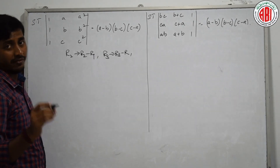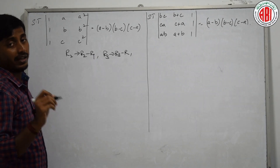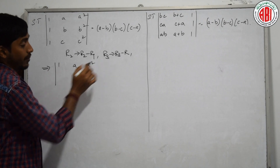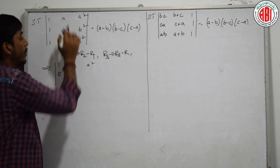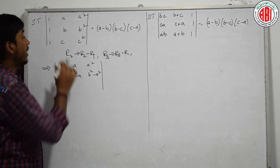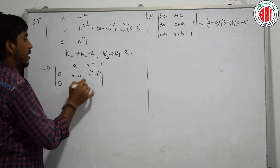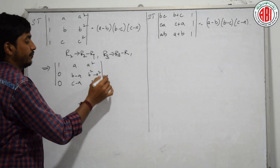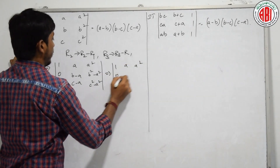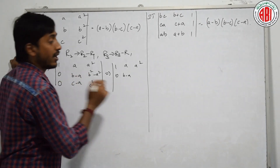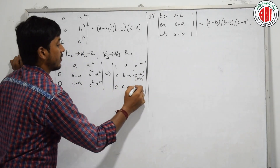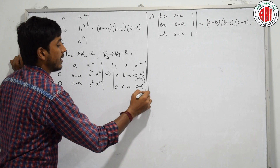Applying R2→R2−R1 and R3→R3−R1: the first row 1, A, A² stays as it is. The second row becomes: 1 minus 1 is 0, then B minus A, then B² minus A². The third row becomes: 1 minus 1 is 0, then C minus A, then C² minus A².